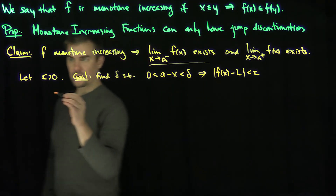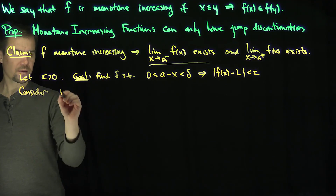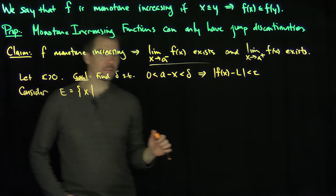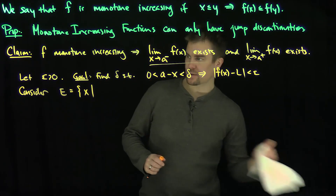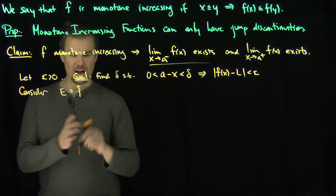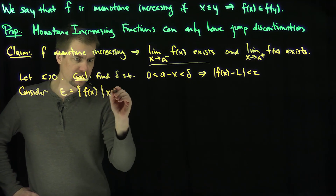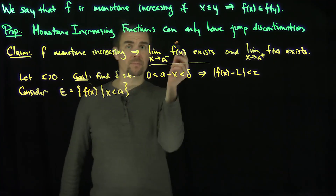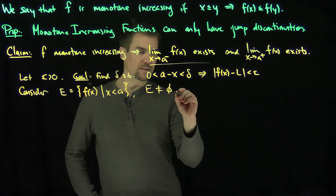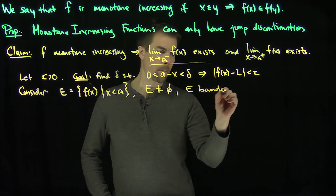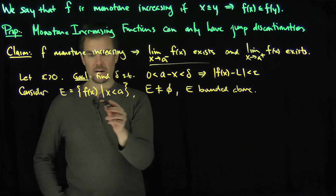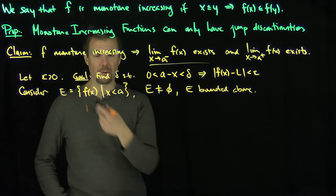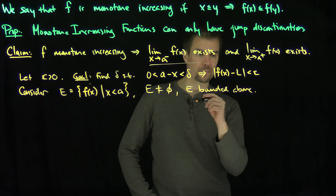What I can do is consider the set E: the set E is the set of all f of x such that x is less than a. So we're going to consider this set of points. Clearly the set E is not empty, and it's bounded above since f is increasing. Why is it bounded above? Because I can simply plug in any number larger than a, and f of that larger number is an upper bound. So it's bounded above.